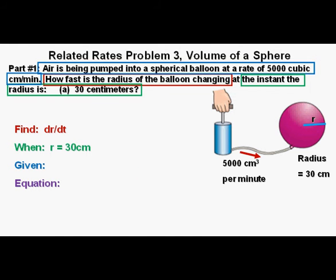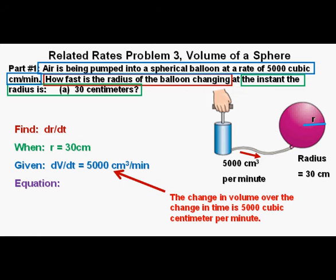And what are we given? We're given that air is being pumped into the balloon at a rate of 5,000 cubic centimeters per minute. And we'll call this dV/dt equals 5,000 cubic centimeters per minute.